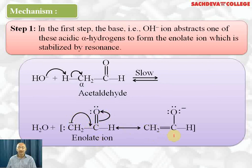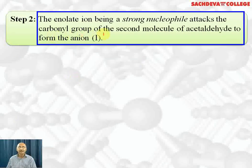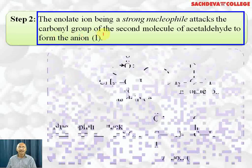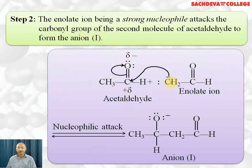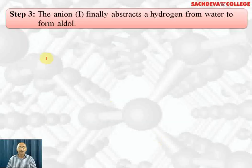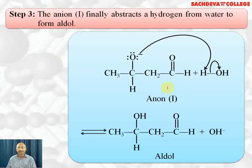In the second step, the enolate ion, being a strong nucleophile, attacks the carbonyl carbon of the second aldehyde molecule. This pair of electrons shifts to oxygen so that oxygen becomes negatively charged — forming an anion. In the third step, this anion picks up H⁺ from water and forms the aldol, while OH⁻ is regenerated.